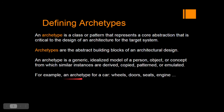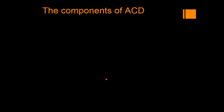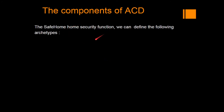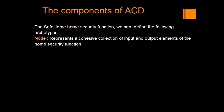An example for archetypes: for a car, the wheels, the doors, the seats, and engines are the archetypes of a car. Now, what are the components of the ACD? We are explaining in terms of the home security system. We have nodes — they represent the cohesive collection of input and output elements of the home security system.